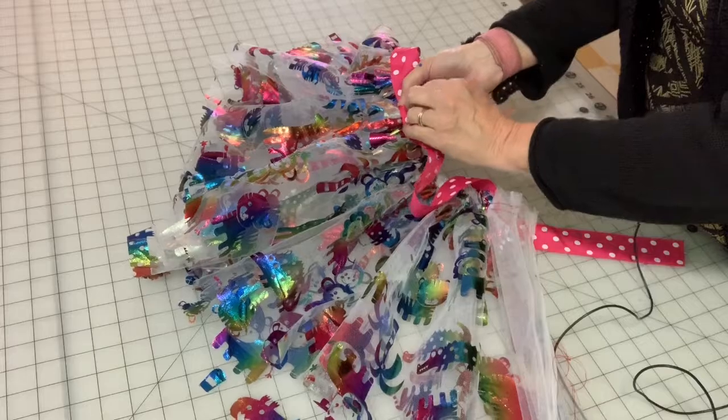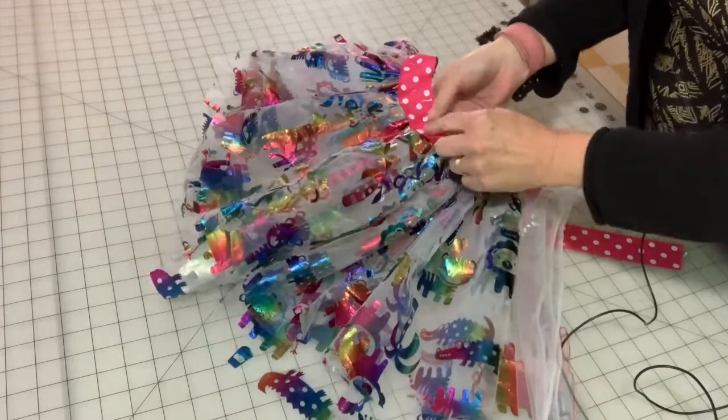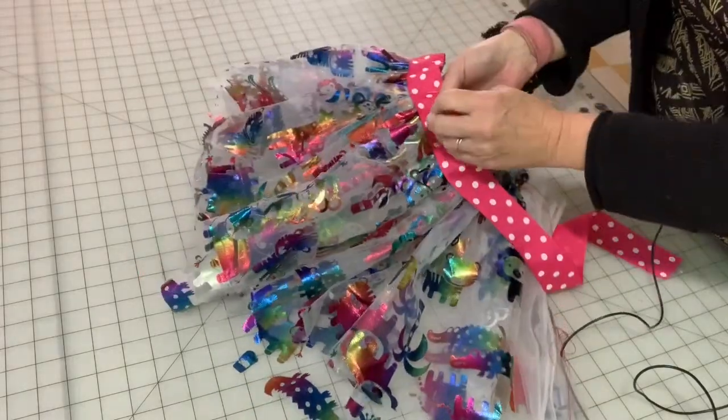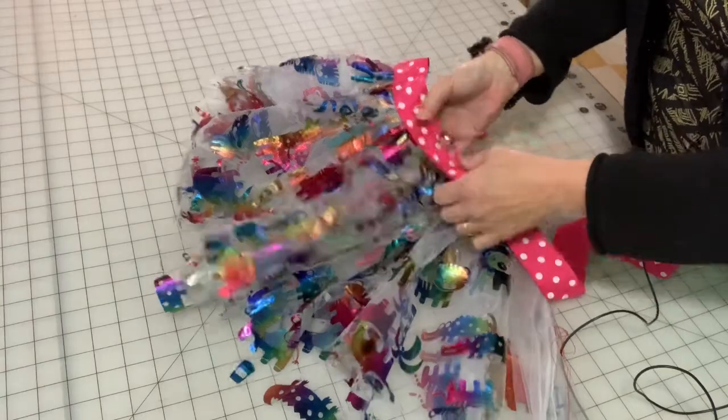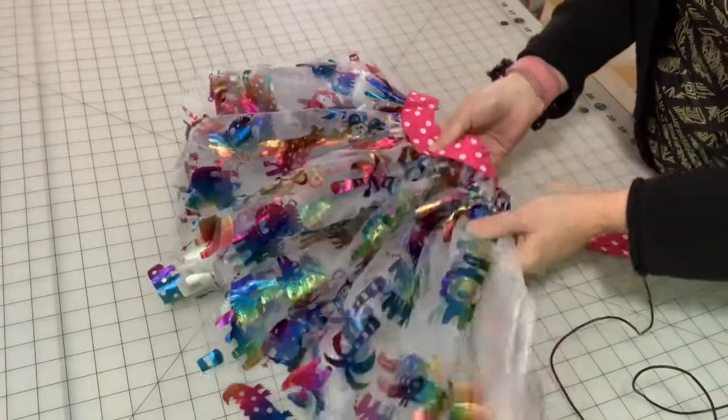So if you were going to make a regular skirt out of this, you would probably attach this little ruffly tulle thing to the skirt and then put the waistband on. That's what I would do.